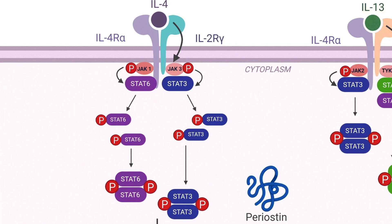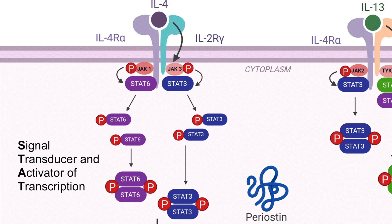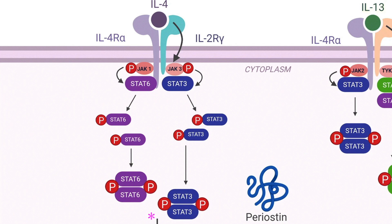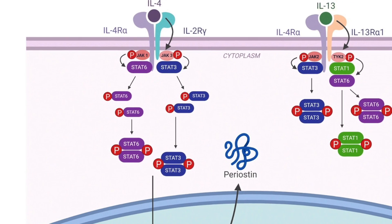Cytokine binding induces the association of separate cytokine receptor subunits. Then the activated receptor recruits and activates intracellular tyrosine kinases of the JAK family. Active JAKs phosphorylate signal transducer and activator of transcription (STAT) proteins, which then dimerize, enter the nucleus, and activate gene transcription.